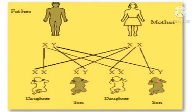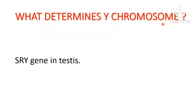Every time we have a 50% possibility of a female child and 50% possibility of a male child. It depends on the father, because the mother is not having a Y chromosome — the father is solely responsible for a male child. In the testes, we have the SRY gene, which is responsible for the Y chromosome and thus for male gender.